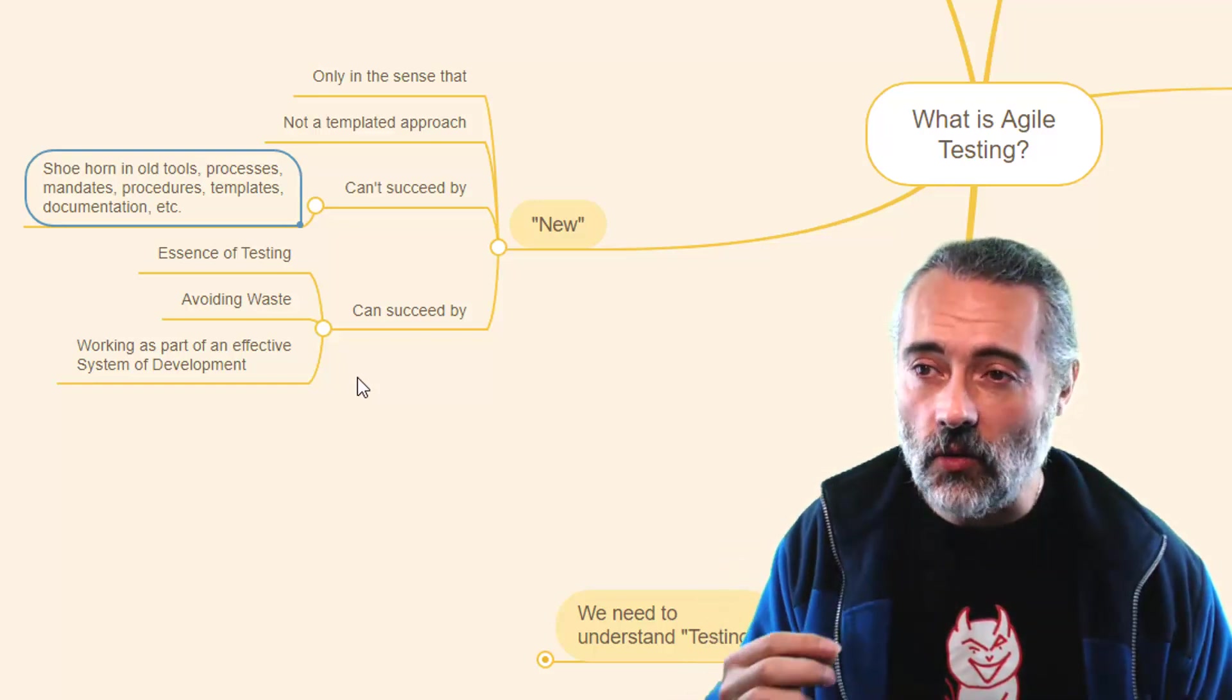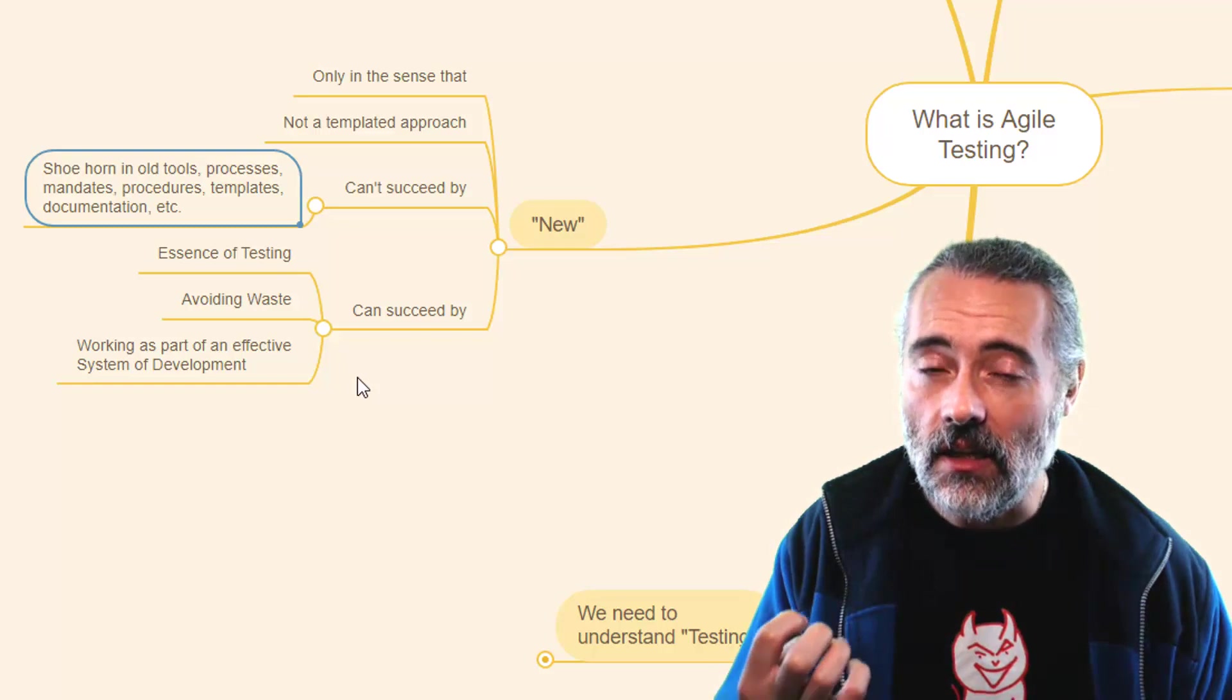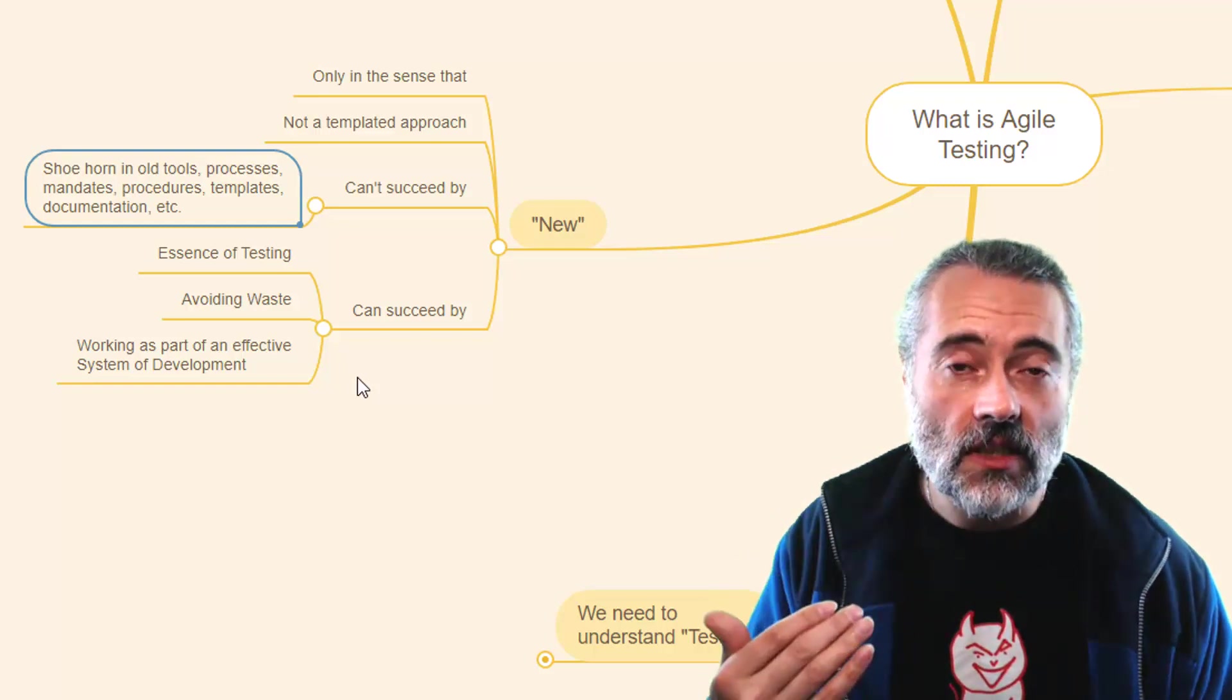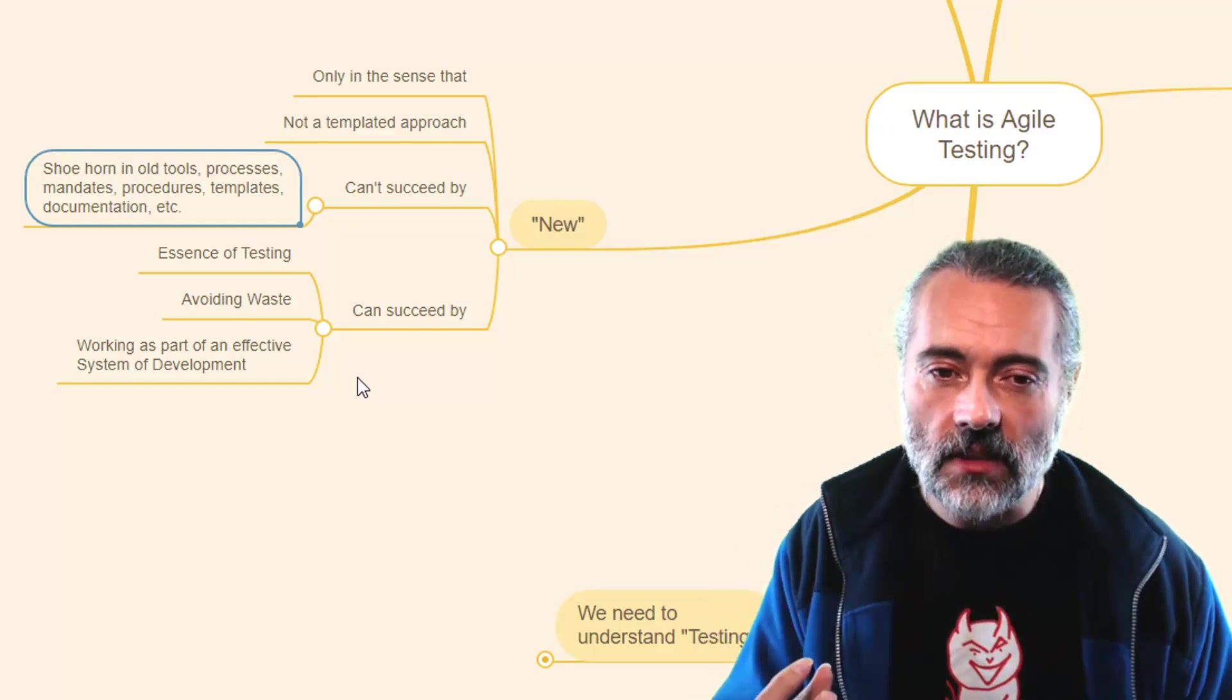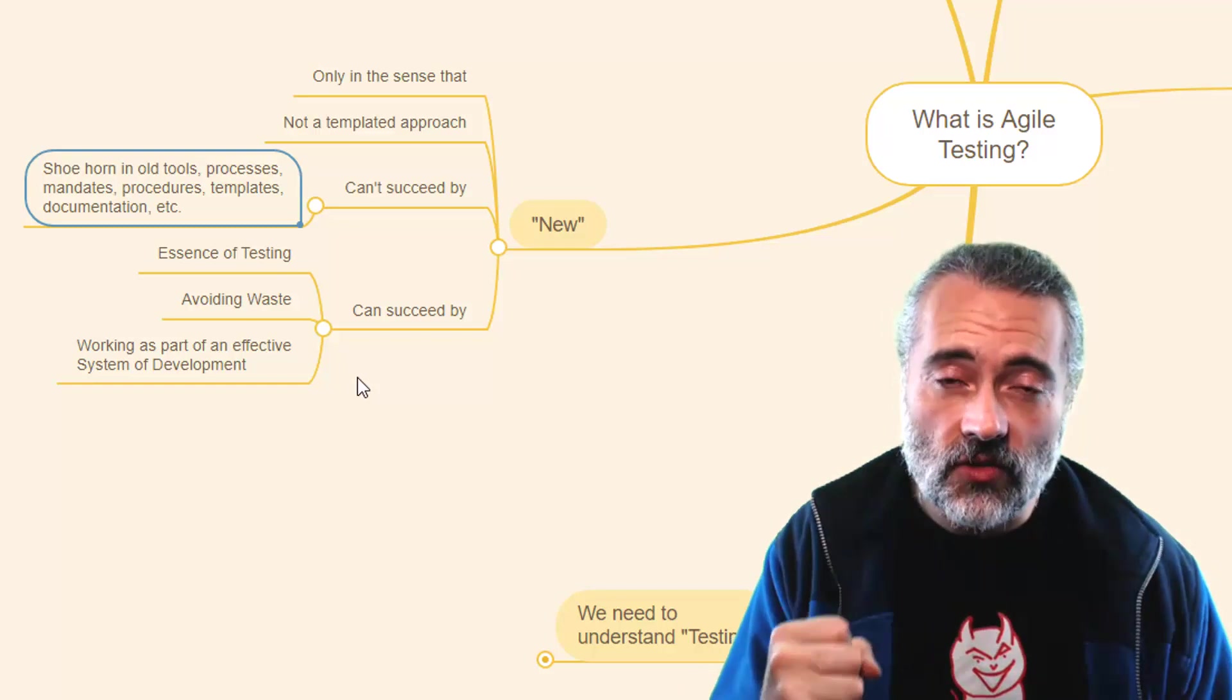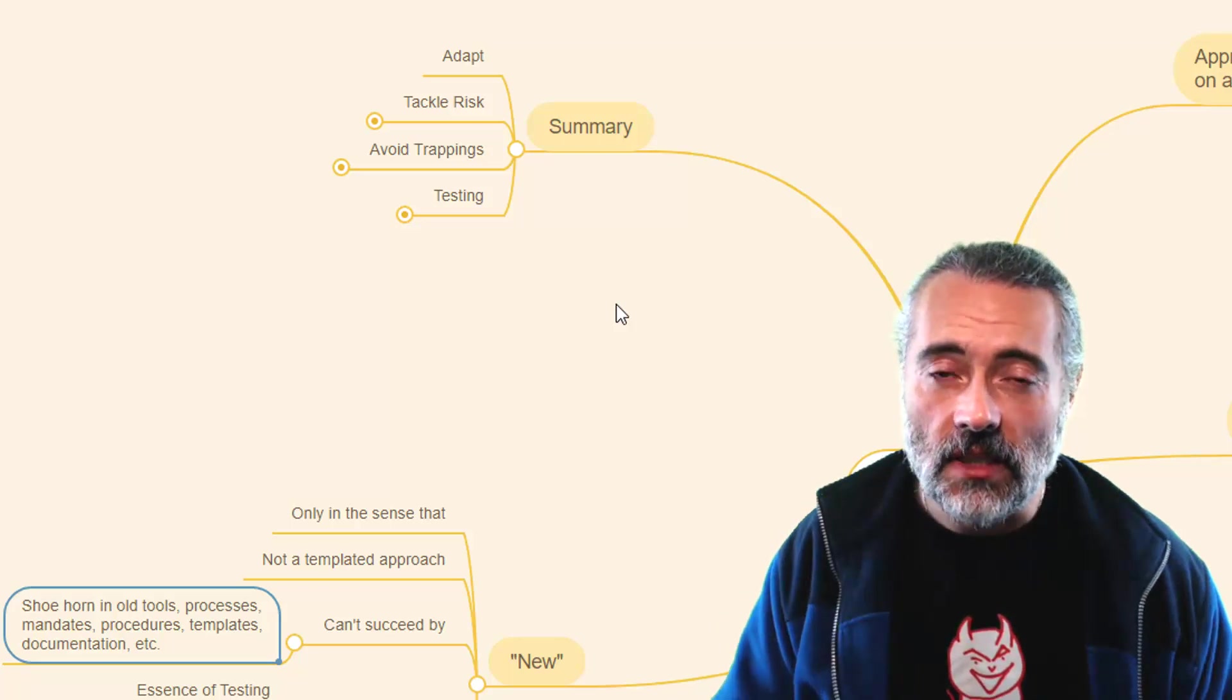We're trying to avoid waste. All those trappings that you've brought from your other projects probably are waste and are not required on an Agile project. So we have to understand that we're trying to avoid it. That's why understanding lean manufacturing can help because it's about avoiding waste a lot of the time. And we're trying fundamentally to work effectively as part of a system of development. That's really what is driving us as part of an Agile approach. So we are trying to adapt to the process in place.